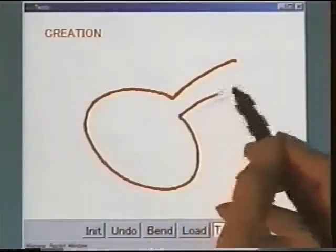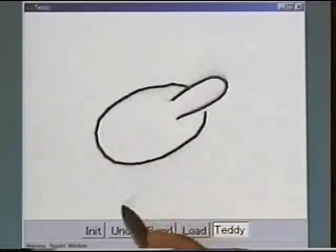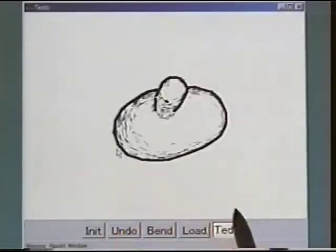When you draw a closed stroke on the blank canvas, the system constructs a 3D model by inflating the closed region.